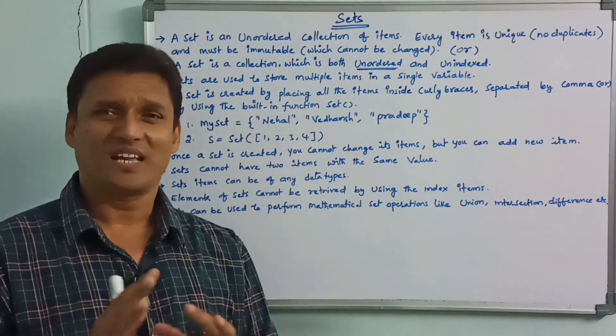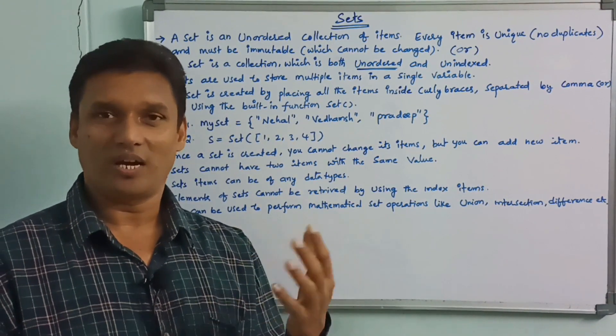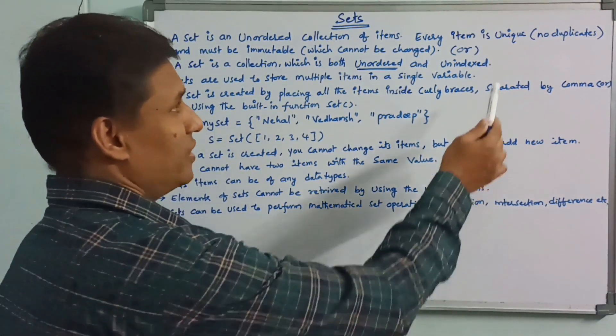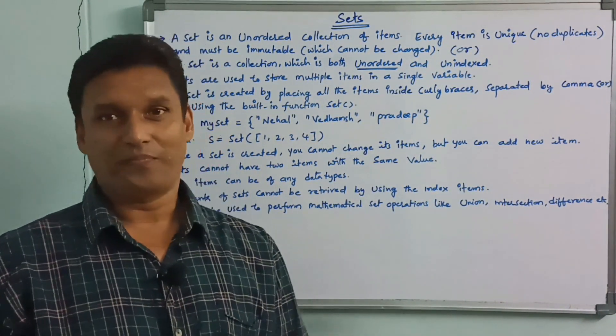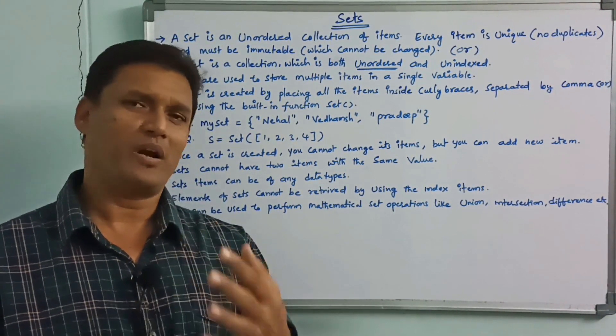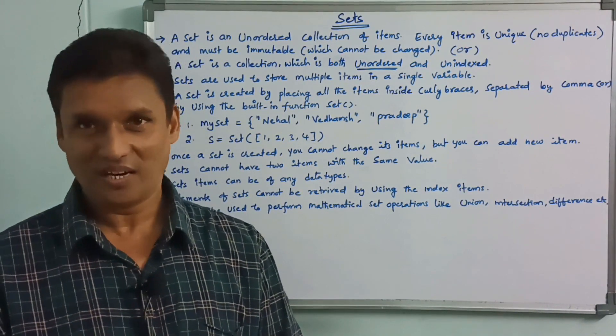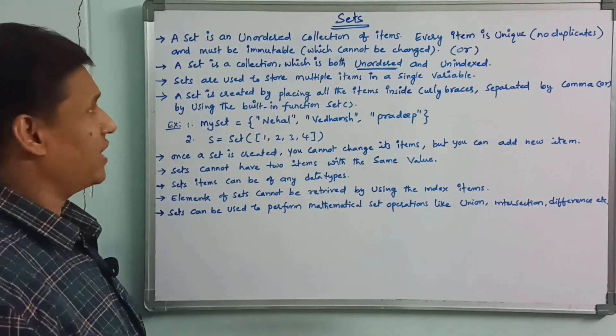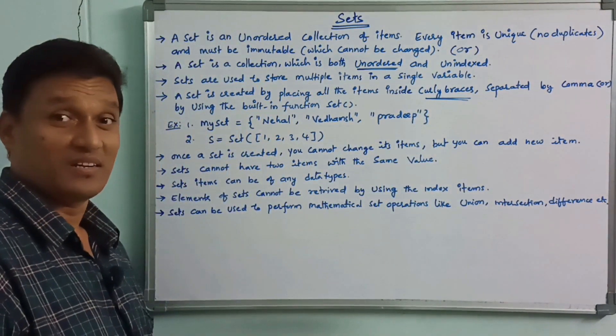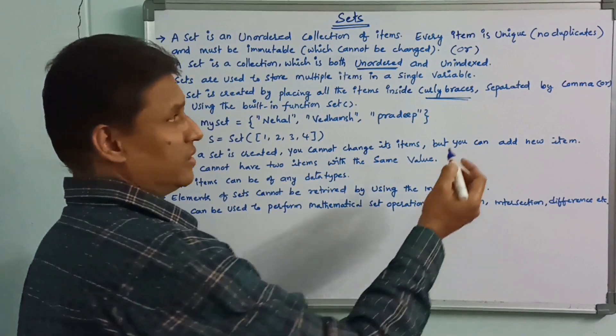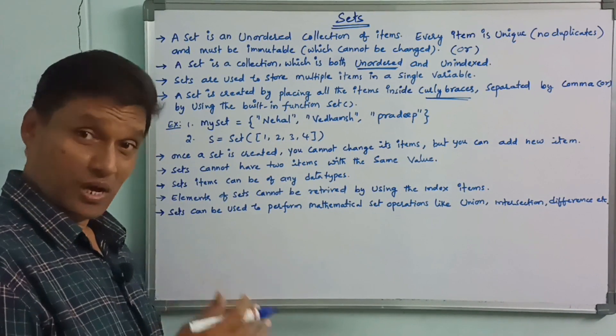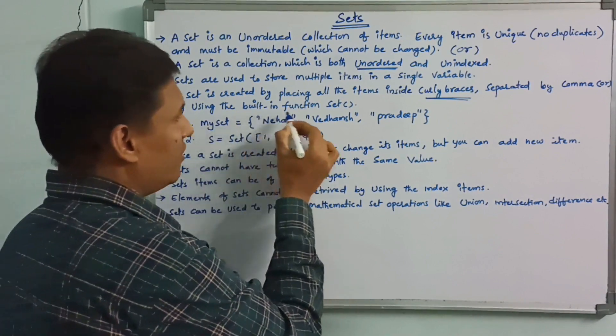Unindexed. Sets cannot use indexing or slicing. Sets are created by placing all the items inside curly braces separated by comma. Or we will create using the built-in function set.